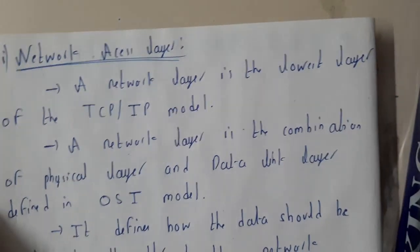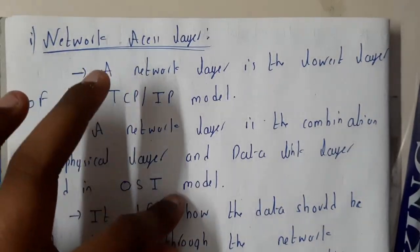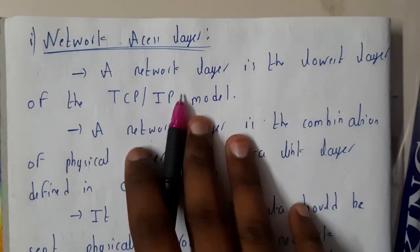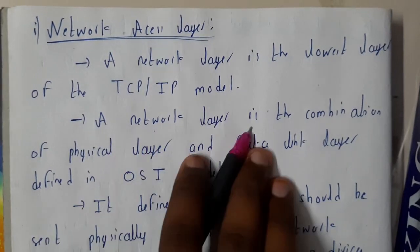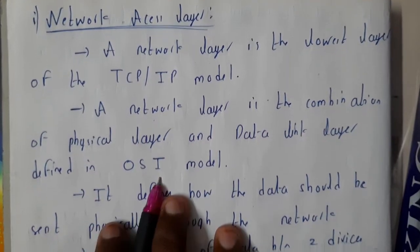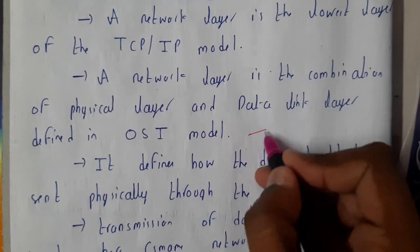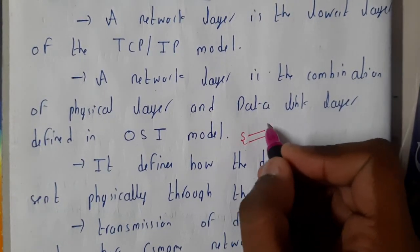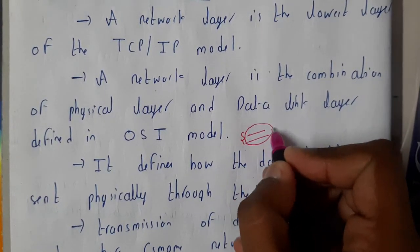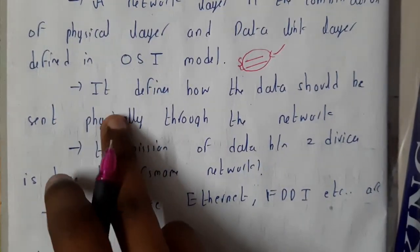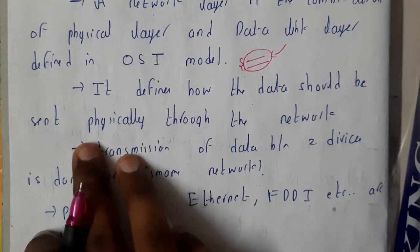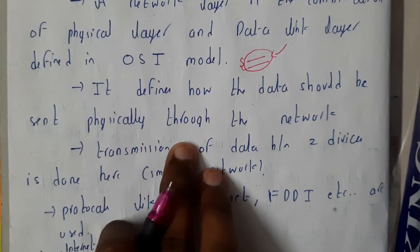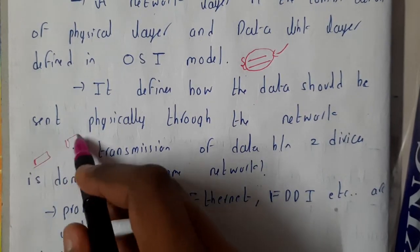The first layer we'll discuss is the network access layer — the bottom layer. It is the lowest layer of the TCP/IP model and is a combination of the physical layer and data link layer from the OSI model. It defines how data should be sent physically through the network.